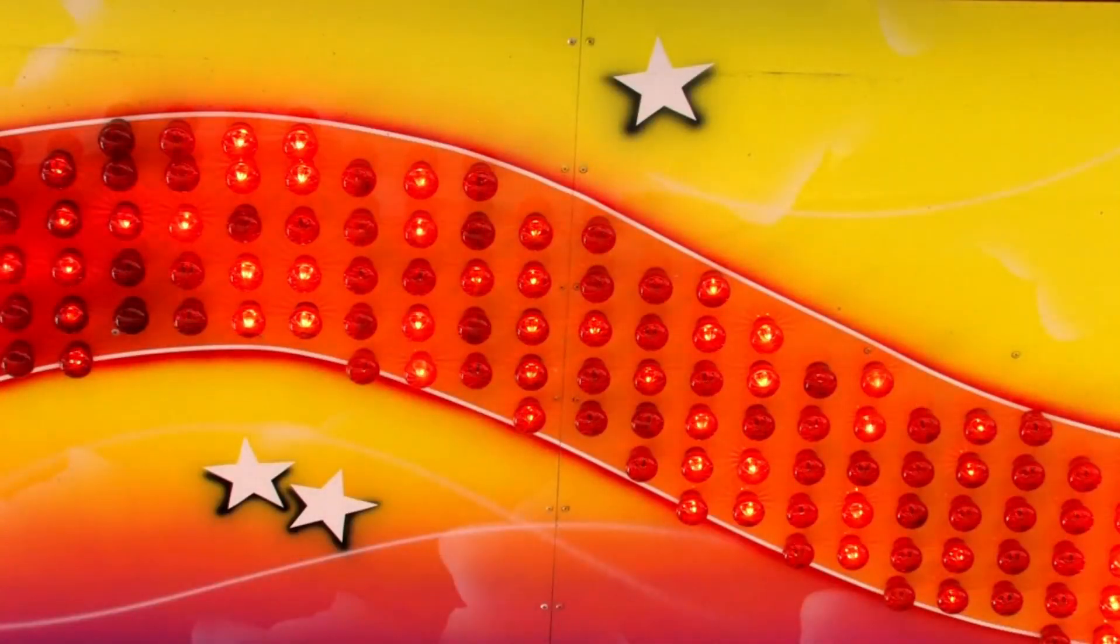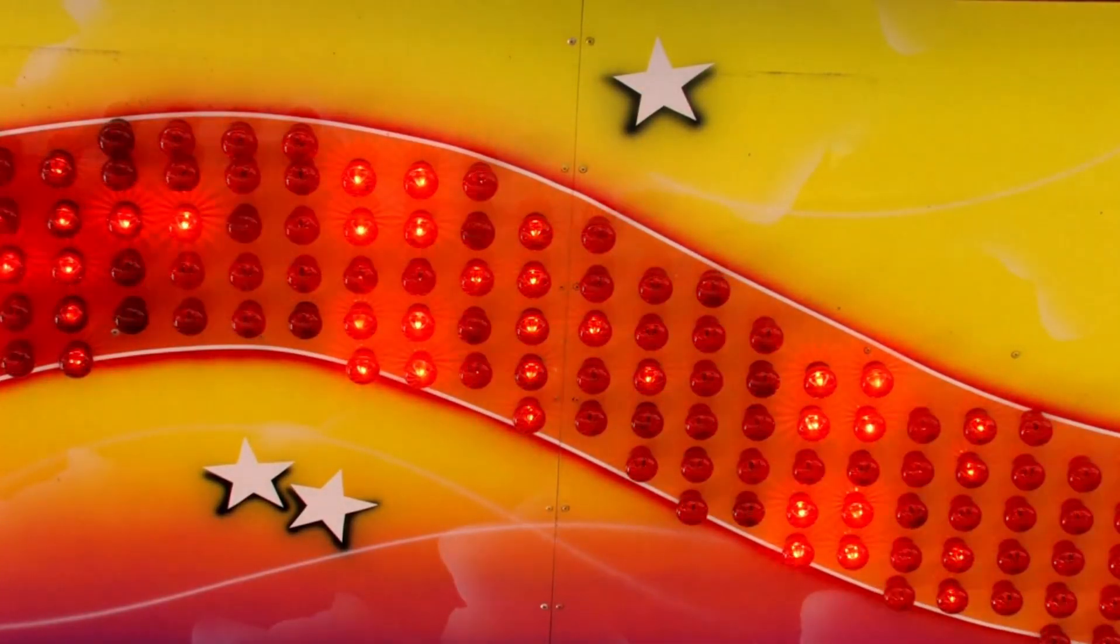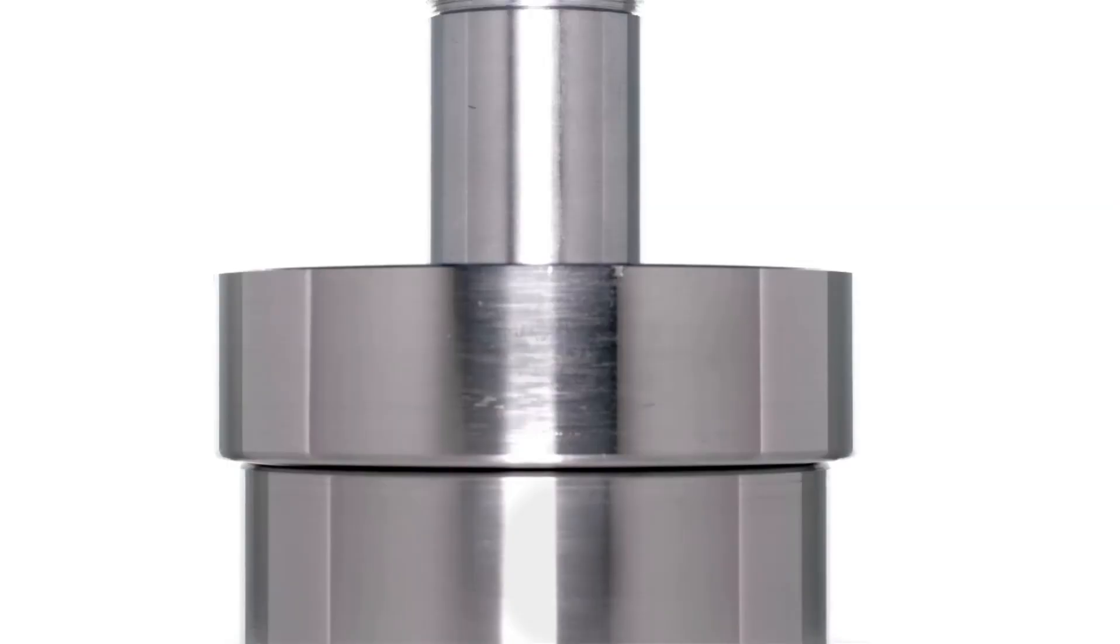The collisions create temperatures a million times hotter than the core of the sun. Thousands of magnets guide the protons on their journey, while intricate cooling systems keep the magnets at temperatures colder than outer space.